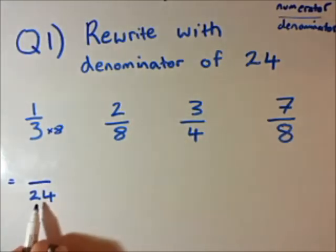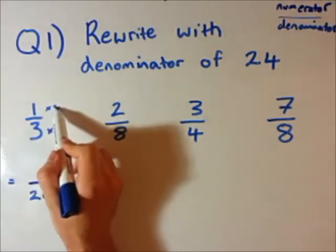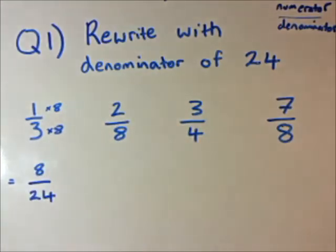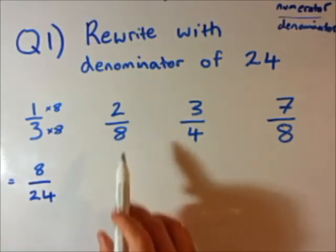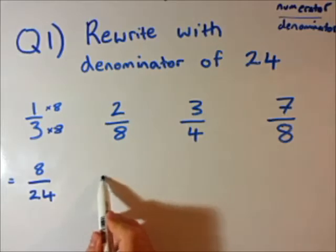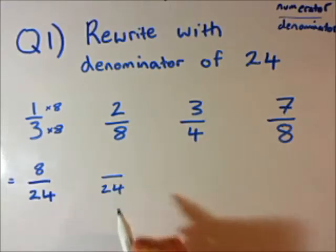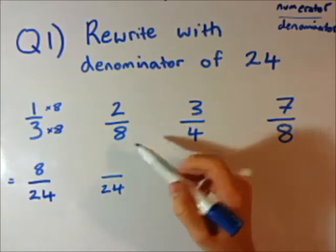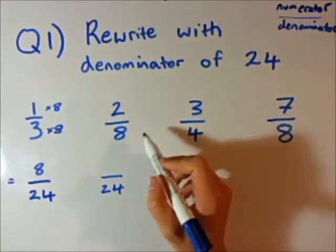I need to times 3 by 8. So I've times the bottom — the denominator — by 8, so I've also got to times the top by 8. So 1 times 8 is just 8. I've written the first one with the denominator, or the bottom, as 24. Now for the second one, I'm going to write it with the denominator of 24. What do I need to do to turn 8 into 24? Well, 8 times 3 is 24.